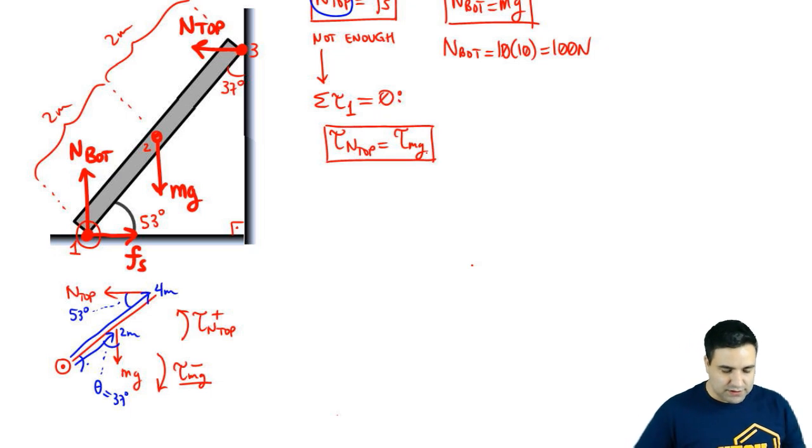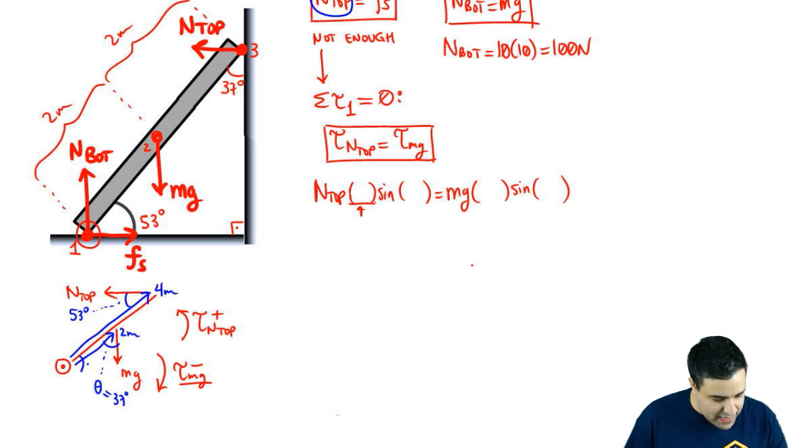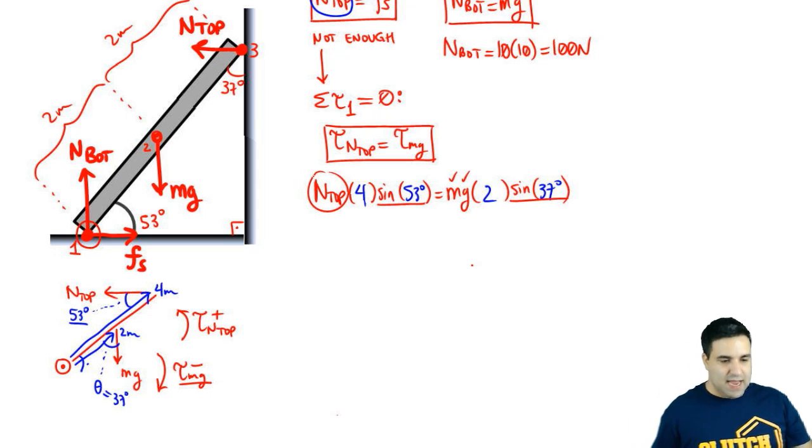So I can write the torque of n top equals torque of mg. Now I'm going to expand both equations. Torque n top is n top times its r vector times sine of its theta. mg is mg times r vector times sine of theta. The r vector for n top is 4, 4 meters long. For mg is 2 meters long. The sine for n top right here between n top and its r vector is 53. And this one is 37. I have mg. I can find the signs. So I'll be able to find n top.